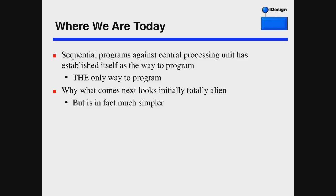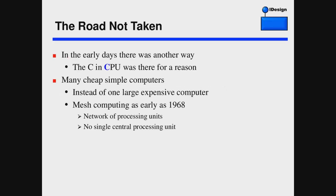In the early 70s, there was a fork in the road. There was another way of programming. We say CPU, CPU, CPU — but the 'C' in CPU which stood for 'central' was there for a reason. In the early 70s there was another way of doing computers: instead of a central processing unit, how about many, many simple and cheap processing units? Donald Knuth in 1968 captured the concept of mesh computing, describing it as a viable way of doing computers — a network of processing units, not a single central processing unit — and this was before Intel and Moore's Law took off.